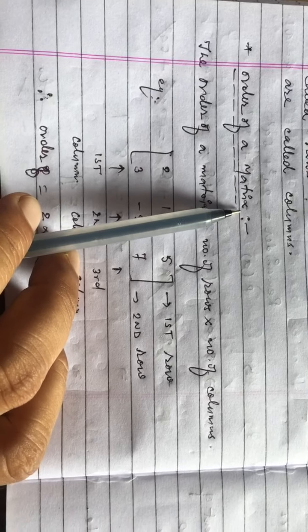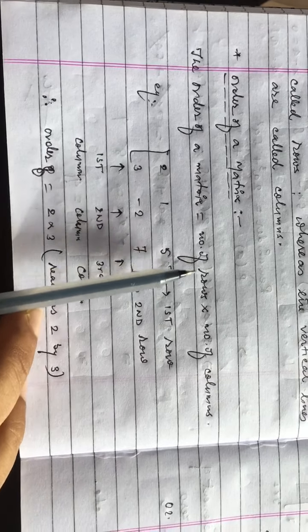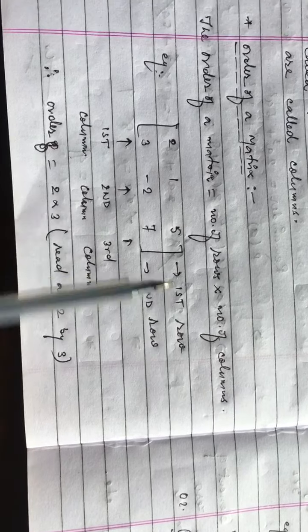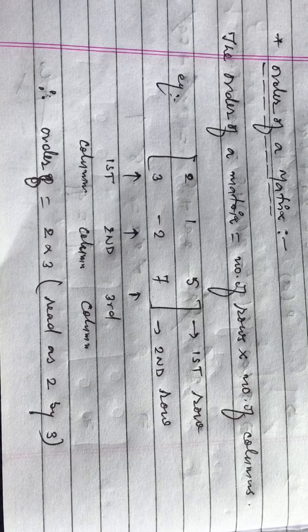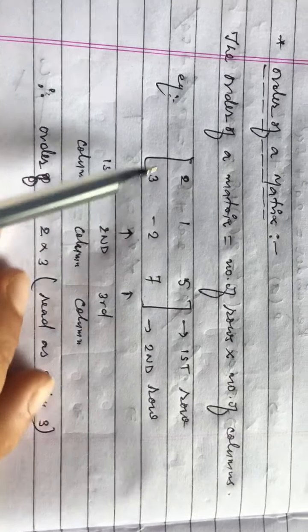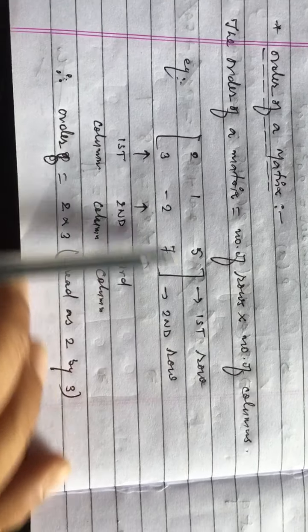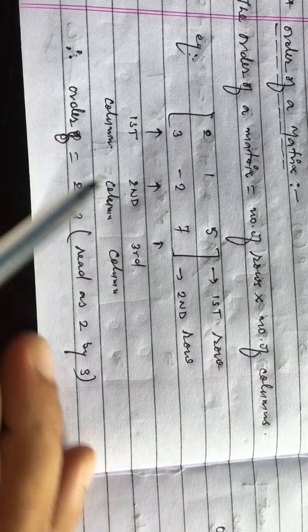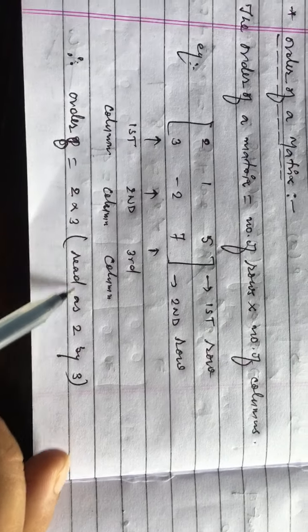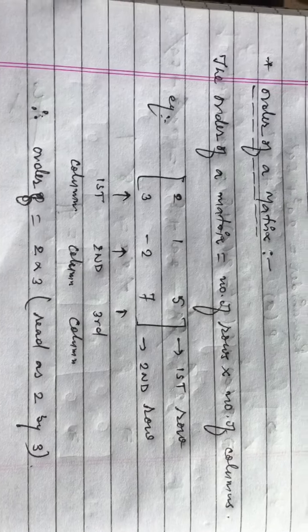Order of a matrix: The order of a matrix is defined as the number of rows multiplied by the number of columns — how many rows and how many columns are there. For example, a matrix having elements arranged in two rows and three columns is read as two by three. So this matrix has order two by three.